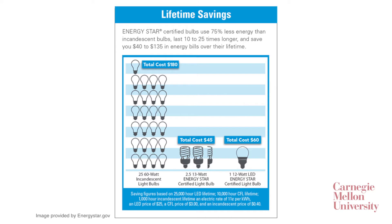A rebound effect occurs when we take action to reduce energy consumption, but we end up with less savings than what we anticipate. For example, we can reduce lighting energy consumption in our houses by 75% by installing more efficient light bulbs. If we leave the lights on for the same period of time, we will indeed save 75% of the lighting electricity consumption.